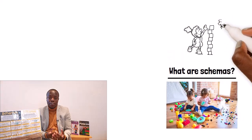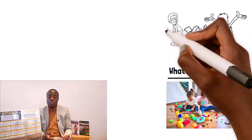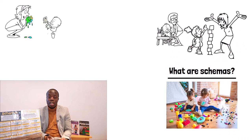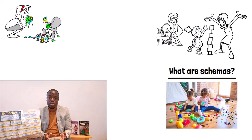Children have a very strong drive to repeat actions, moving things from one place to another, covering things up, putting things into containers, moving in circles and throwing things. These things can be observed through their play.